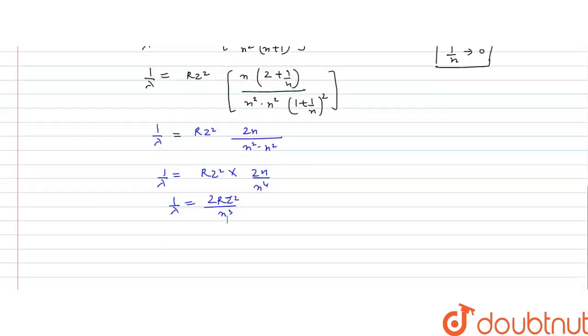Now, it is 1 by lambda, we have to find out the lambda. So, lambda is n cube divided by 2Rz square, we have this relation.